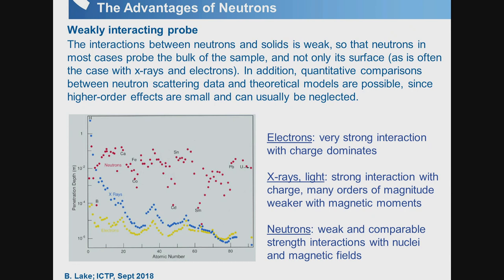In this graph, the nuclear scattering of the neutron is shown as a function of atomic number — the red points — and it's of the order of centimeters penetration depth. With x-rays, as the element gets heavier, the penetration depth gets smaller, of the order of microns. With electrons it's even smaller. So in those techniques you have multiple scattering.